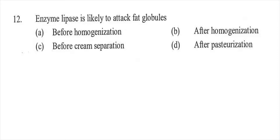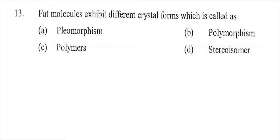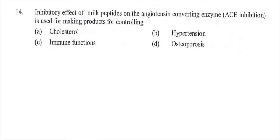Question twelve: Enzyme lipase is likely to attack fat globules — option A before homogenization, option B after homogenization, option C before cream separation, or option D after pasteurization. The right answer is B, after homogenization. Question thirteen: Fat molecules exhibit different crystal forms, which is called — option A polyomorphism, option B polymorphism, option C polymers, or option D stereoisomer. The right answer is B, polymorphism.